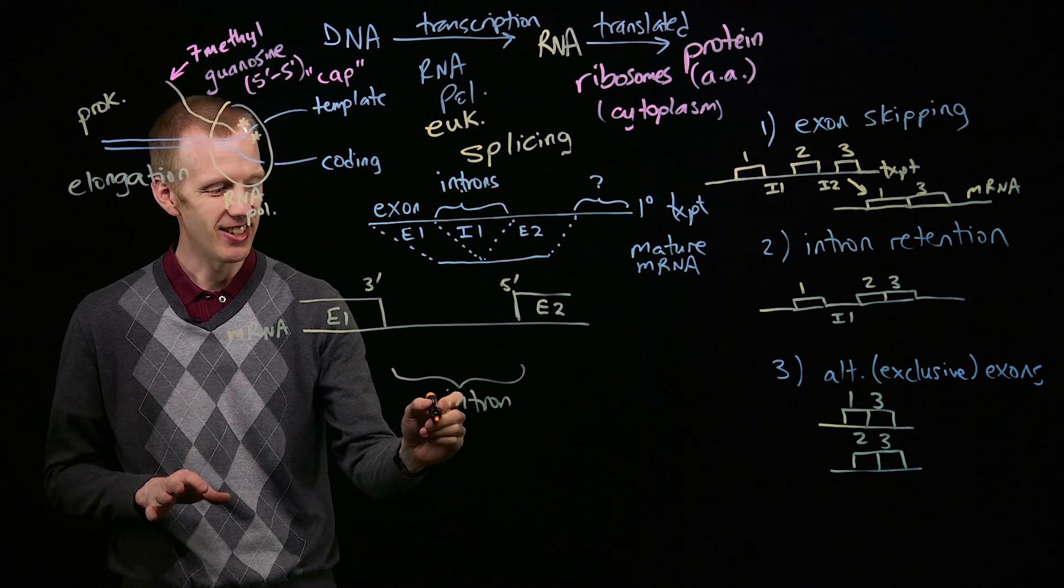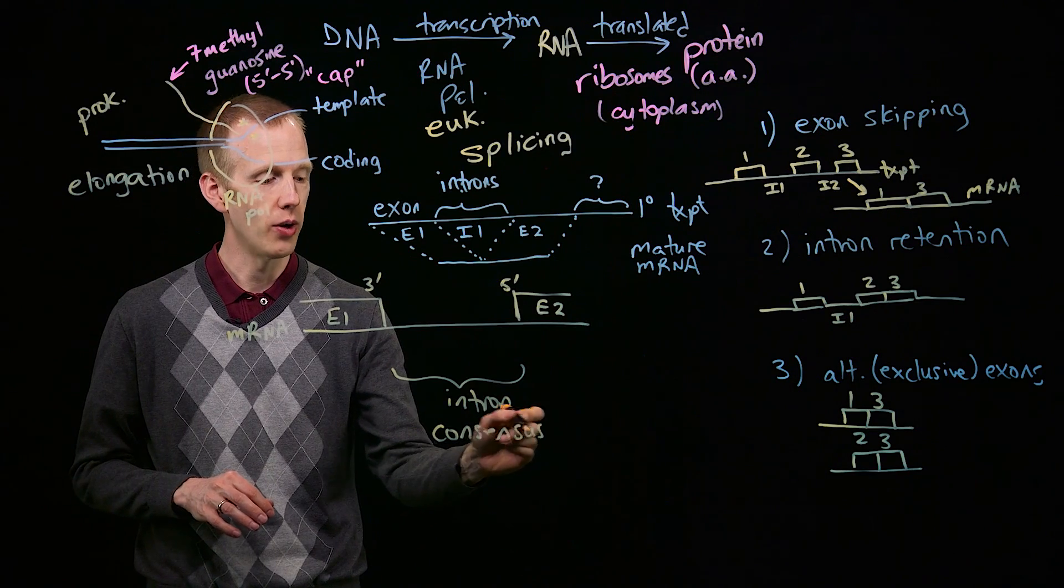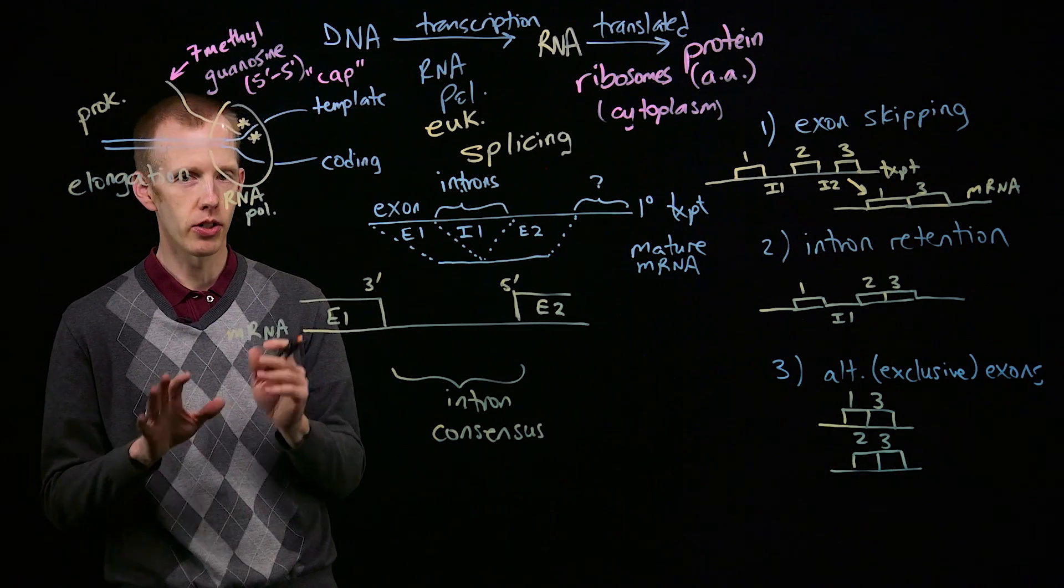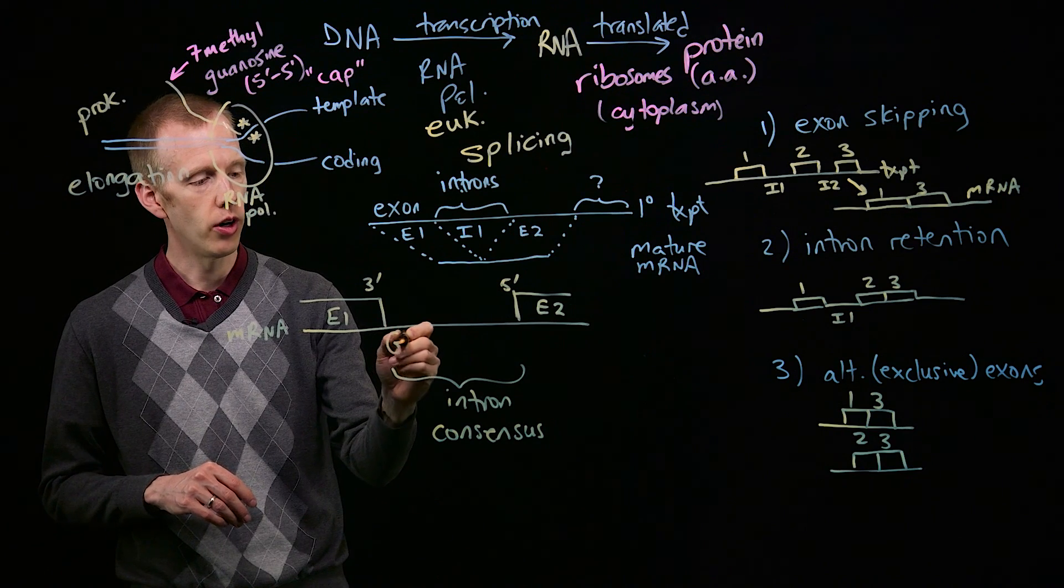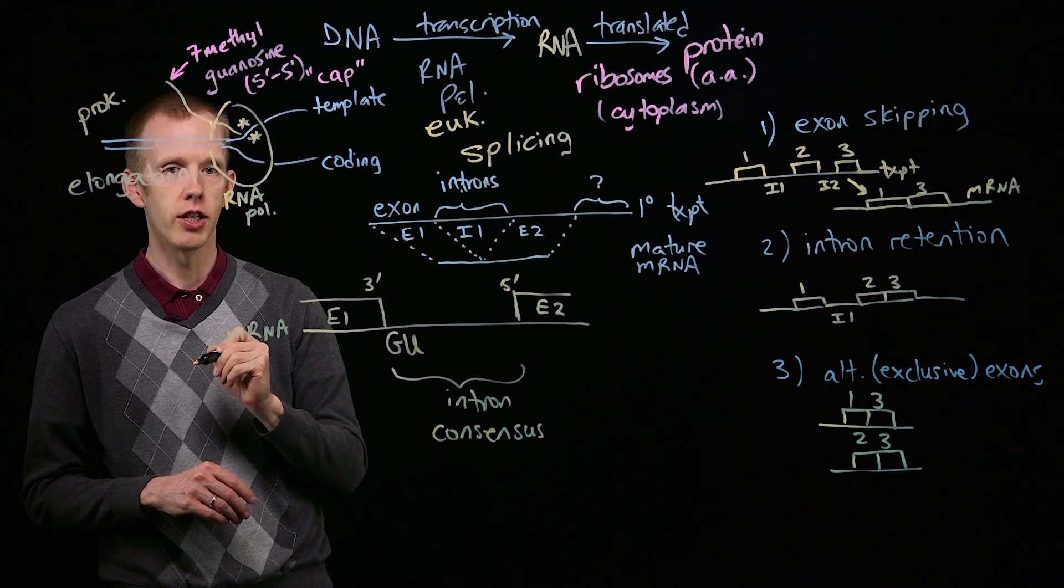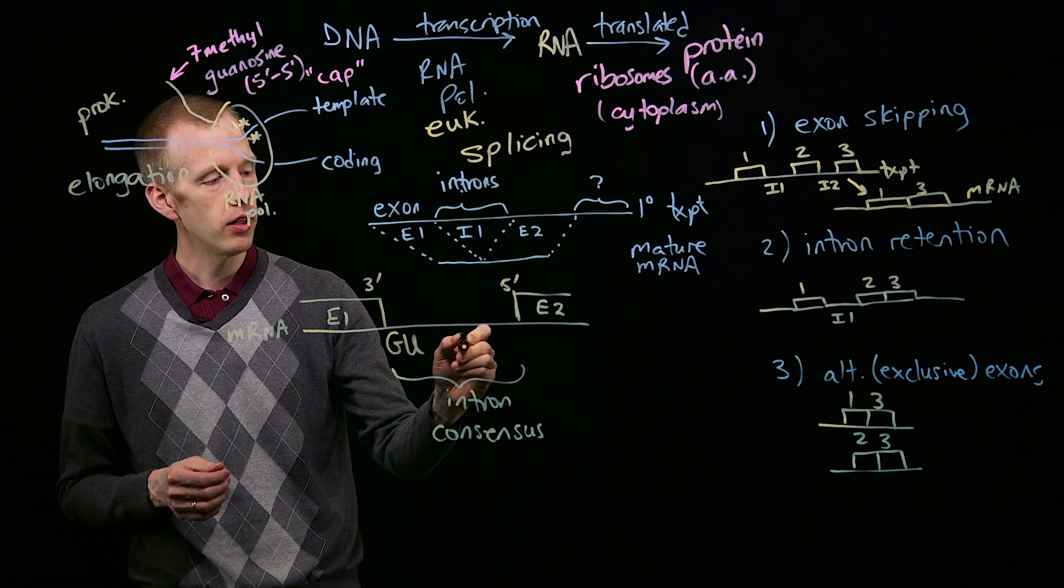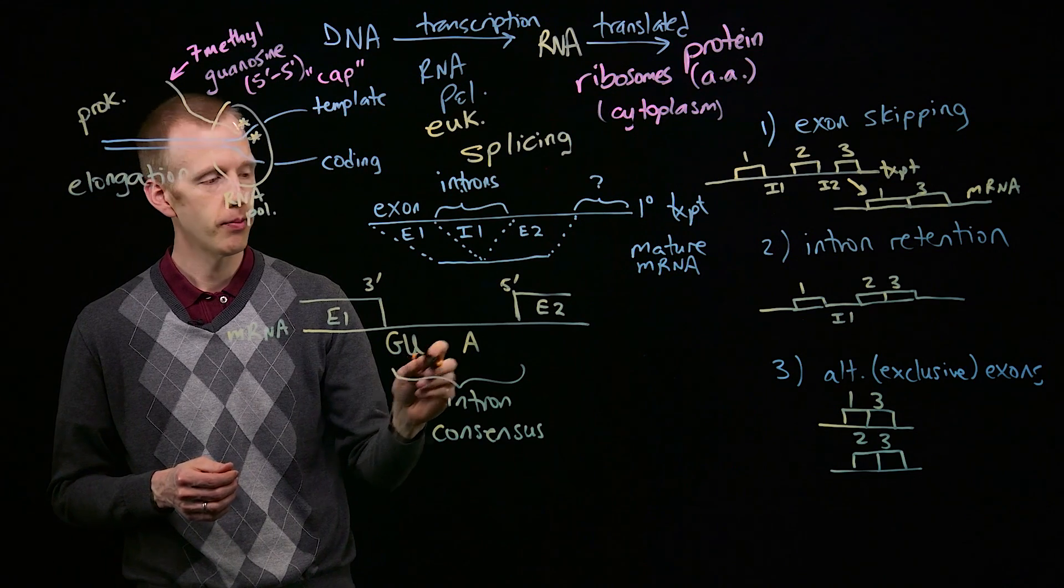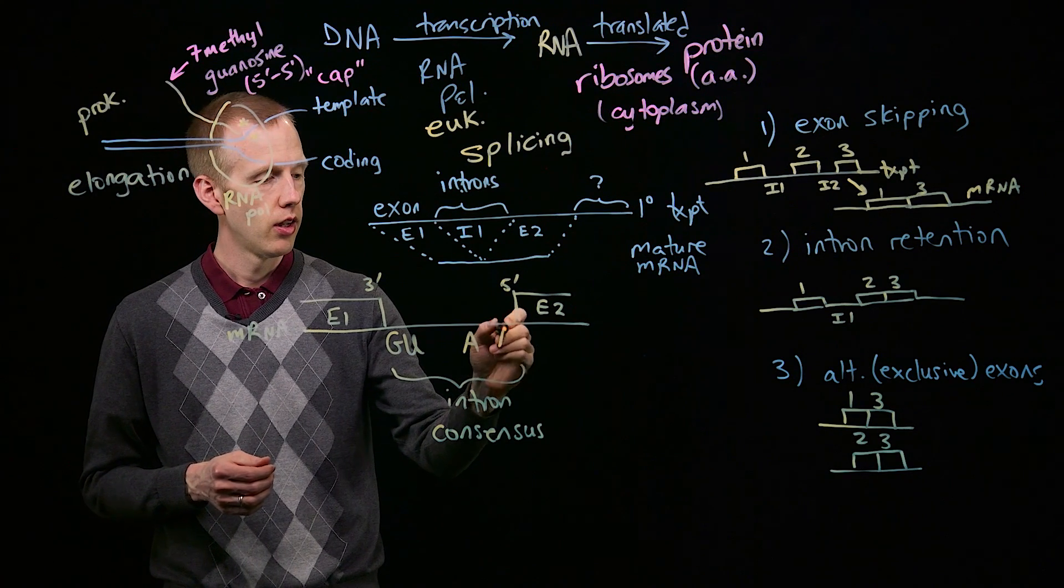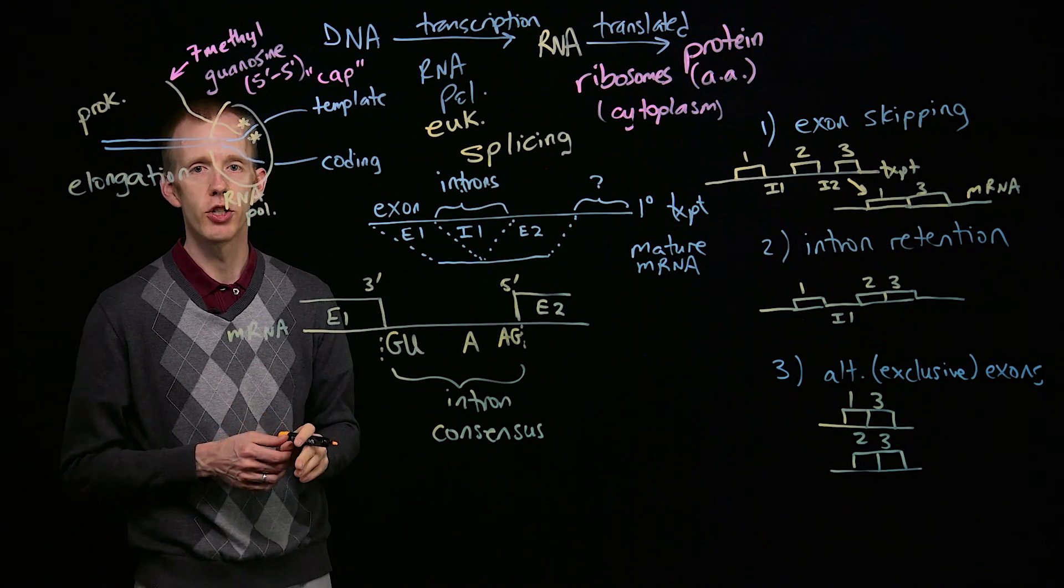Every intron, the consensus sequence, remember that means that this is not necessarily always exactly the sequence, but it's always approximately this. The 5' end of an intron always has a G and a U, or almost always has a G and a U. Somewhere in the middle of the intron there will be an A, that's called the branch point. And the very 3' end of the intron usually ends in a G.